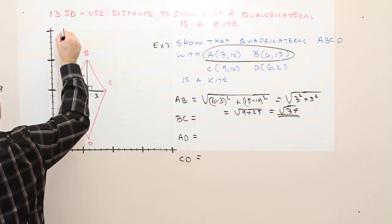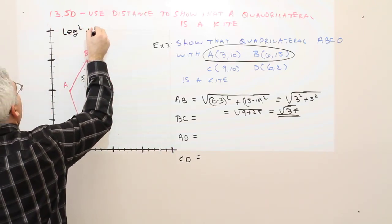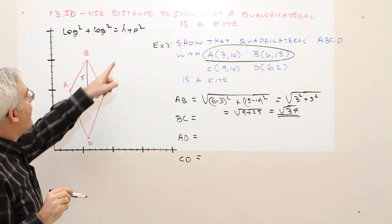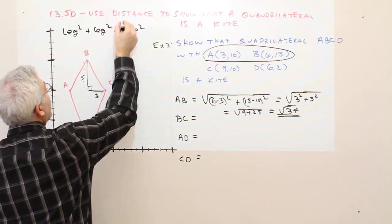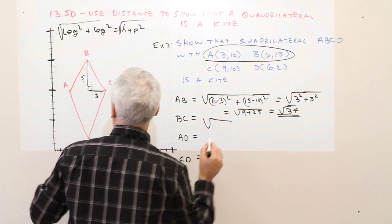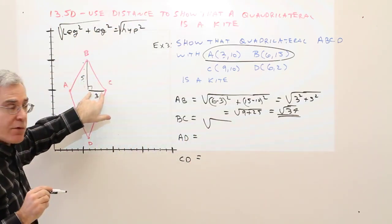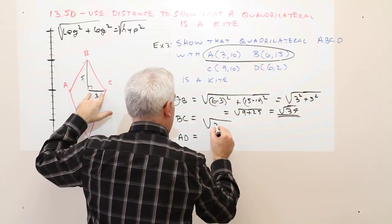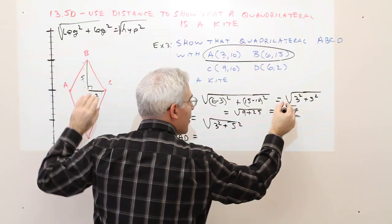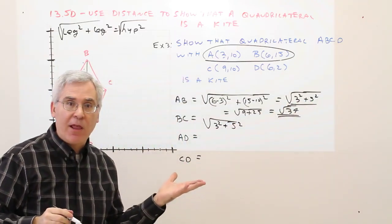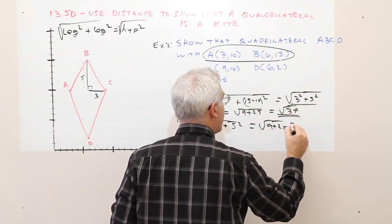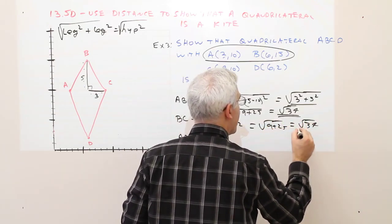So leg squared plus leg squared equals hypotenuse squared. If I wanted to find the hypotenuse, I'd just take the square root. So that's going to be the square root of 3 squared plus 5 squared, which as you notice is the exact same thing that I had for the distance formula. Equals the square root of 9 plus 25 equals the square root of 34.